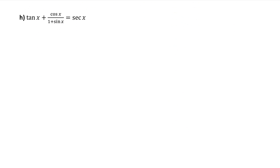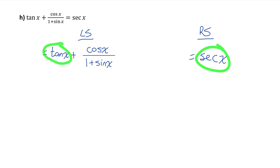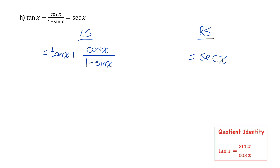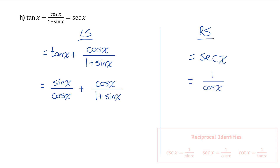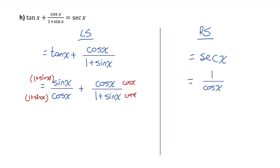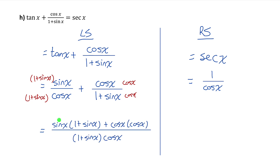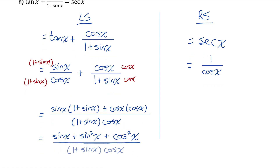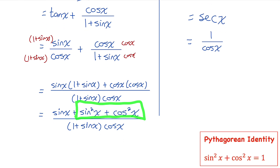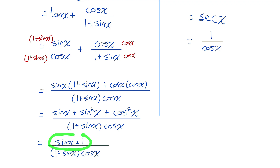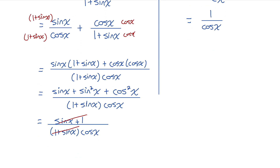On to the last one. I'll separate into left side and right side, then rewrite tan and secant in terms of sine and cos. Using the quotient identity, tan x equals sine x over cos x, and secant equals 1 over cos. On the left side I have two fractions being added, so I'll get a common denominator. Combining the fractions over the common denominator and distributing sine x in the numerator gives sine x plus sine squared x plus cos squared x. Sine squared x plus cos squared x is the Pythagorean identity, equal to 1. So the numerator becomes sine x plus 1, and we have a factor of 1 plus sine x in the denominator that cancels. What remains is 1 over cos x, which is exactly the right side. Left side equals right side — this equation is an identity.